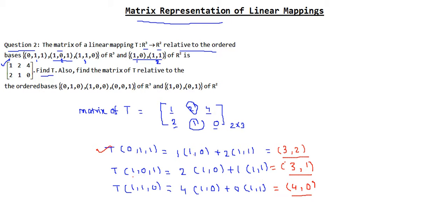We have to find T(x,y,z). So what we are going to do is express (x,y,z) as a linear combination of the basis vectors (0,1,1), (1,0,1), and (1,1,0). Let me write that part so we don't forget.